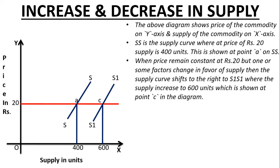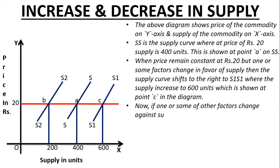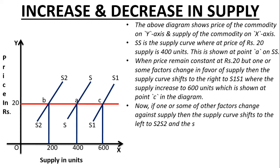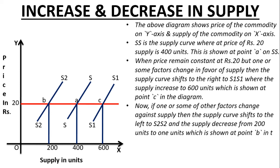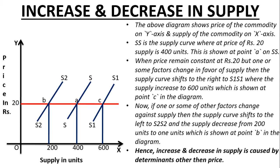Now from S we have gone to S1 — this is an increase. But what about decrease? I'll draw one more supply curve named S2S2, where the quantity becomes 200 and the equilibrium point will be B. If one or some of the factors change against supply, the supply curve shifts to the left to S2S2 and supply decreases to 200 units, shown at point B in the diagram.